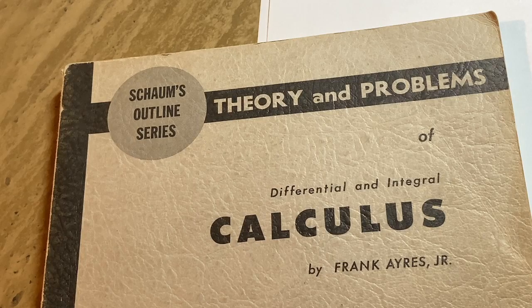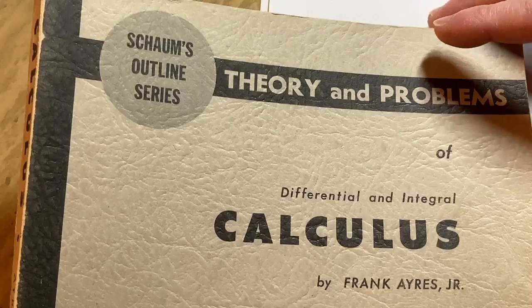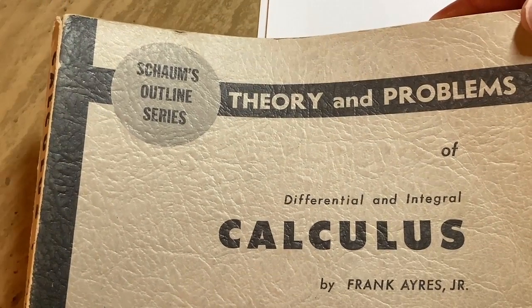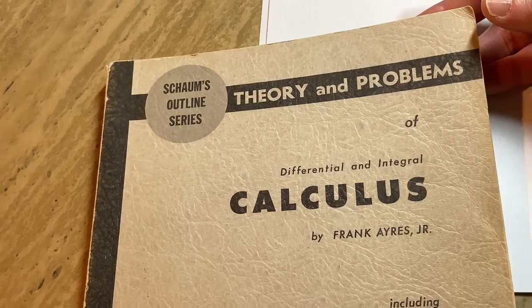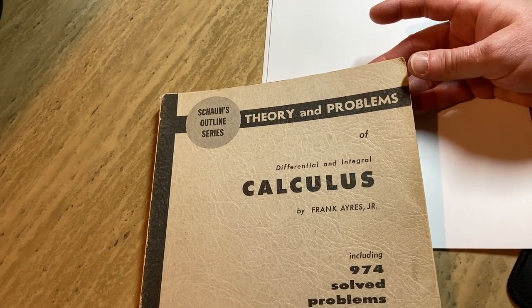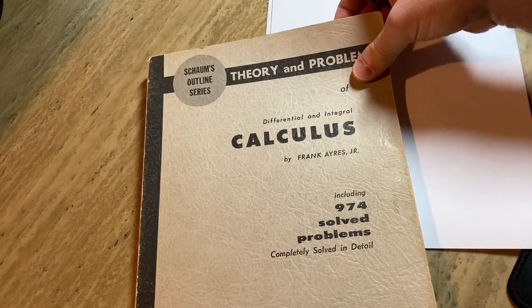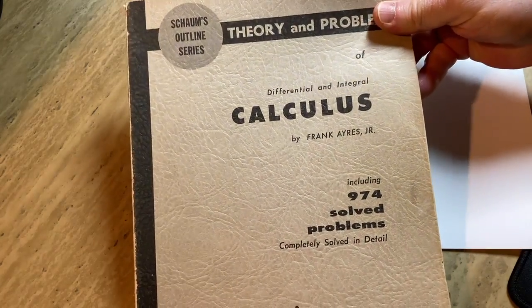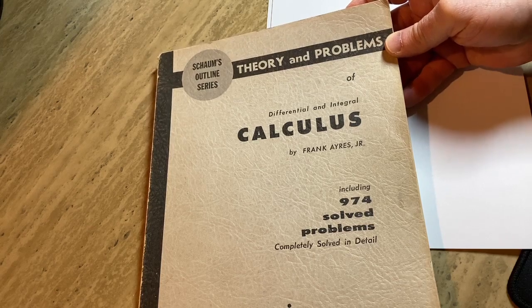This is one of those books that is good for learning calculus, and it's inexpensive. It's called Schaum's Outline Series, Theory and Problems of Differential and Integral Calculus. This is the one by Frank Ayres Jr. This is an older edition. This one includes 974 solved problems, completely solved in detail.